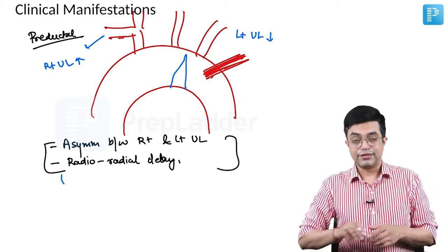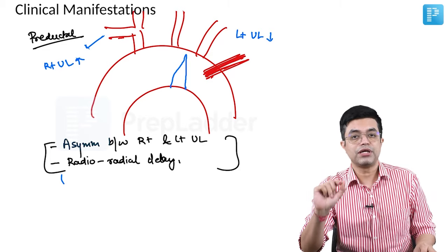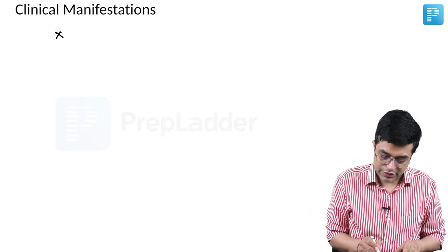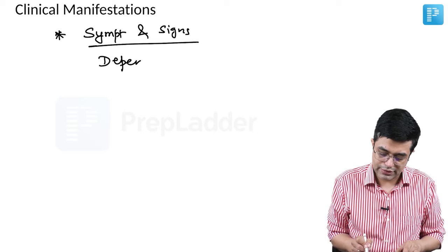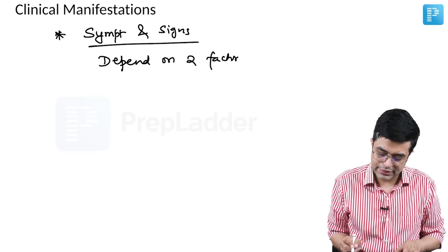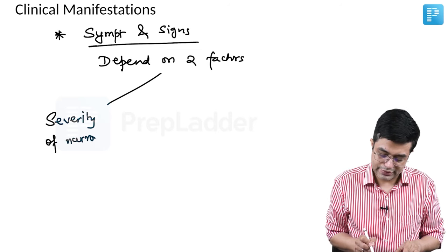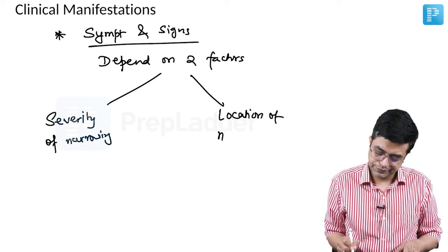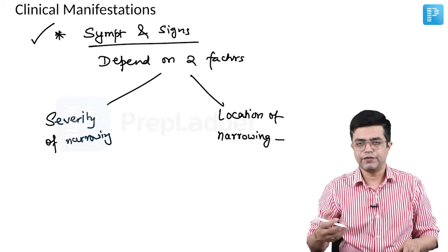What it means is the site and severity of coarctation will determine the symptoms the patient will develop. The point you need to understand is symptoms and signs in coarctation of aorta depend upon two factors: first is severity of narrowing, and second is the location of narrowing. These are all the signs and symptoms that you will encounter in these patients.